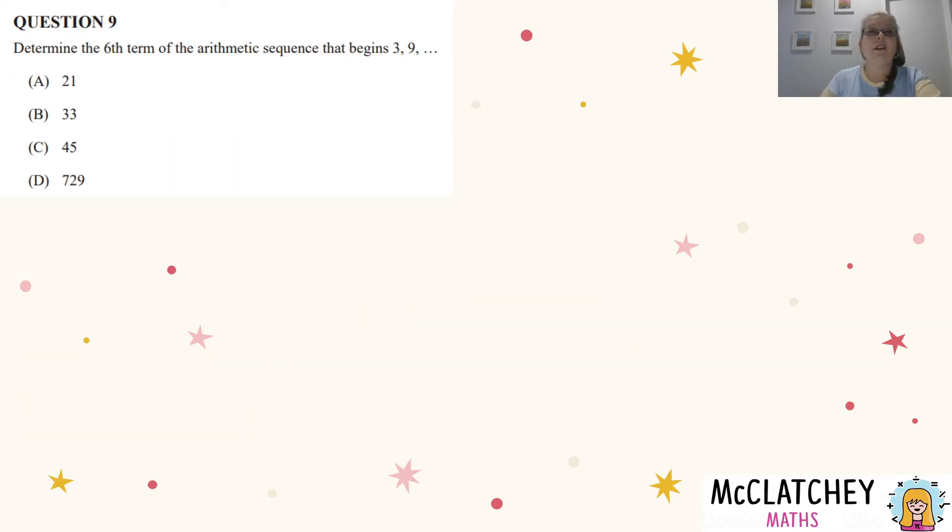Let's go on to question nine. Determine the sixth term of the arithmetic sequence that begins with three, nine. So first of all, we're told it's arithmetic, which means it's adding on a common difference each time. So if we do nine take away three, that is going to be six, our common difference. We know we're looking for the value of T6. Our first term is three.